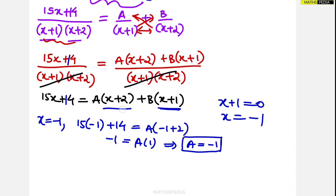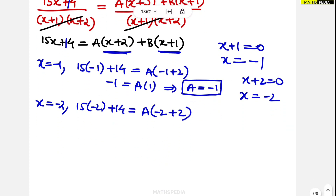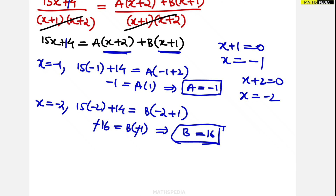To find B, set x plus 2 equal to 0, so x equals minus 2. Substituting: 15(minus 2) plus 14 equals B(minus 2 plus 1). That gives minus 30 plus 14 equals minus 16, equal to B times minus 1. Therefore B equals 16.